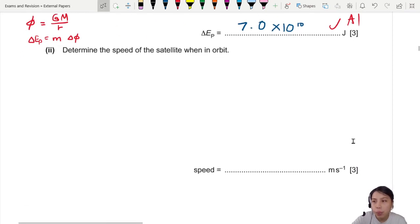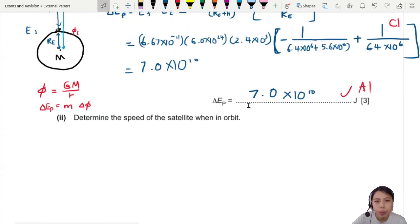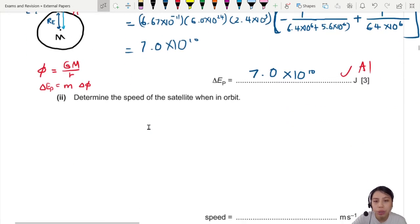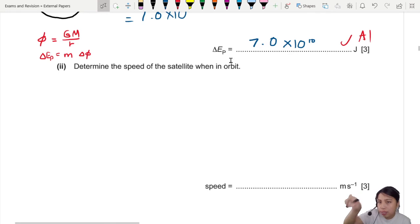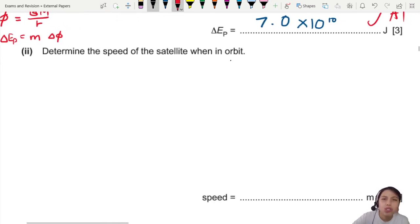Phi initial, phi final. That's also another acceptable method. Up to you which one you use. Good if you know how to use both. Let's move on. Determine the speed of the satellite when it is in orbit. Oh, that's a different chapter already. Wait, orbit means... Okay, so the satellite is going to be up there. It's not just chilling there stationary, no. Orbit means it's going in a circle.